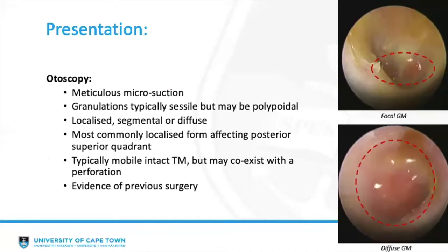The diagnosis is confirmed on auto-endoscopy or auto-microscopy, importantly following meticulous microsuction, which usually reveals granulation tissue on the tympanic membrane with or without involvement of the medial external auditory canal. The granulations typically have a sessile base but may also be pedunculated or polypoidal. They may be localized or segmental, occurring on only part of the tympanic membrane, or diffuse, occurring on the entire surface. The localized form is most common and most commonly involves the posterior superior quadrants.